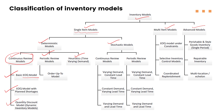Quantity discount models apply when a supplier offers a discount — like 5% or 2% — if you order above a certain level. We also have periodic review models, where we order every quarter, for example, with the same quantity. When demand changes over time, we use dynamic inventory models, such as economic lot sizing models, capacity lot sizing models, and so on.